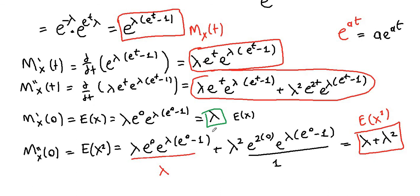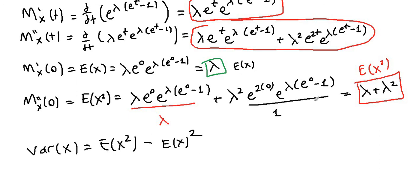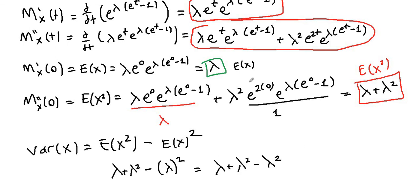Using the definition of variance — E[X²] minus the quantity E[X] squared — we have lambda plus lambda squared minus lambda squared. The lambda squared terms cancel each other, so the variance is also lambda. Therefore, both the expectation and the variance of the Poisson distribution equal lambda.